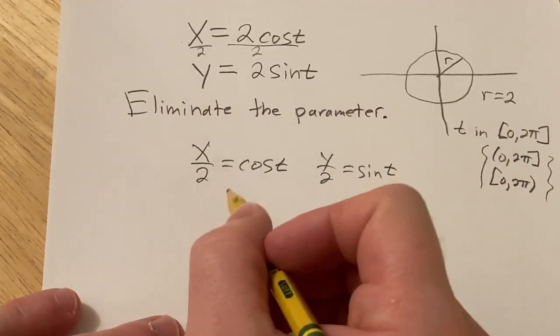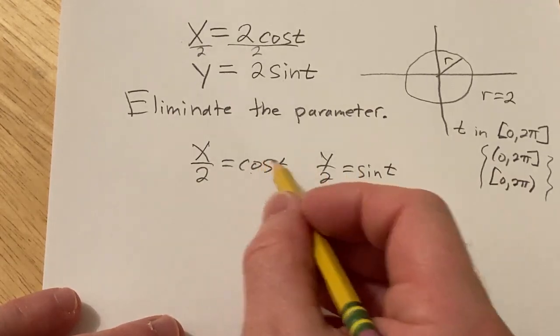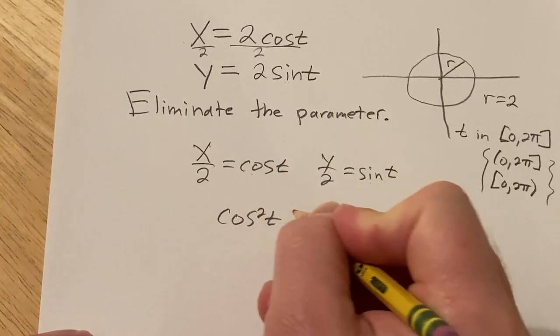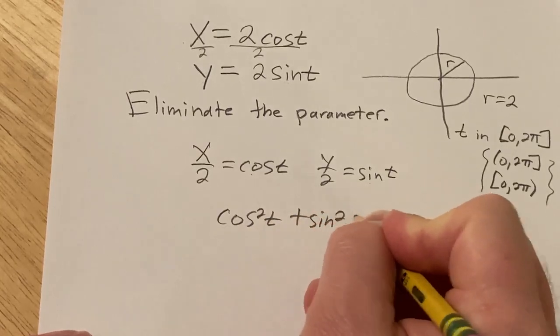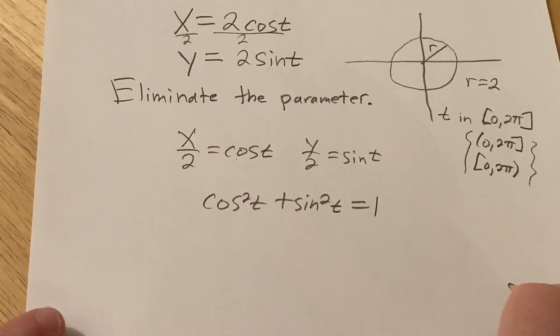Okay and so now if we square these and add them up, cosine squared plus sine squared, that's 1, right? That's an identity from trig.